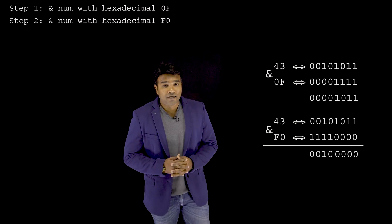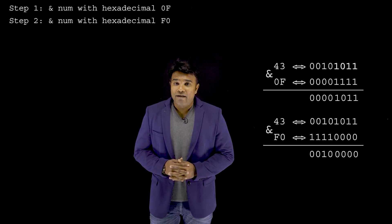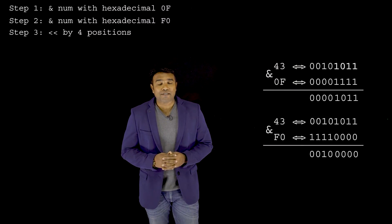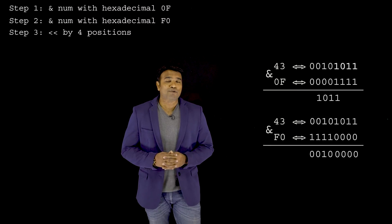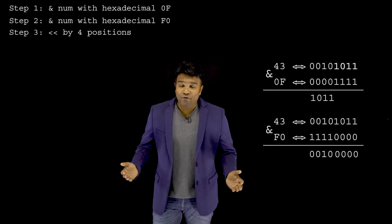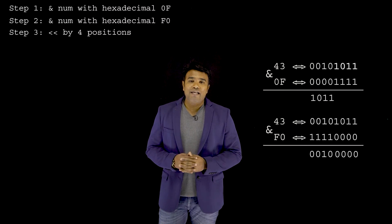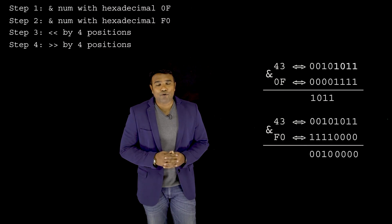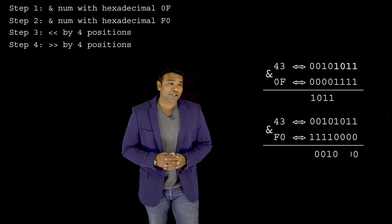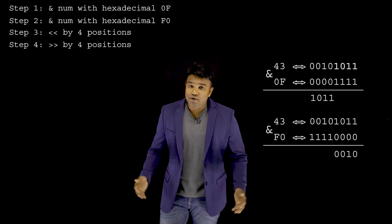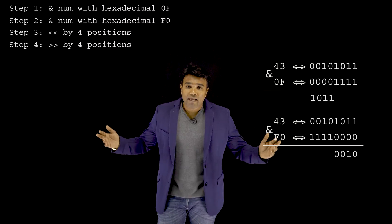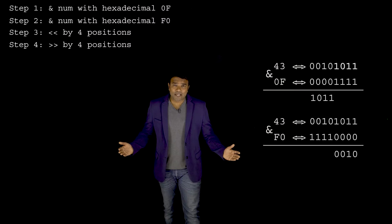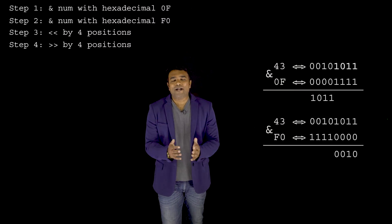The third and fourth steps are about shifting the nibble positions. In the third step, I take my right nibble and shift it to the left by four positions. In the fourth step, I take my left nibble and shift it to the right by four positions. After applying both steps, I have been successful in swapping my nibble positions.